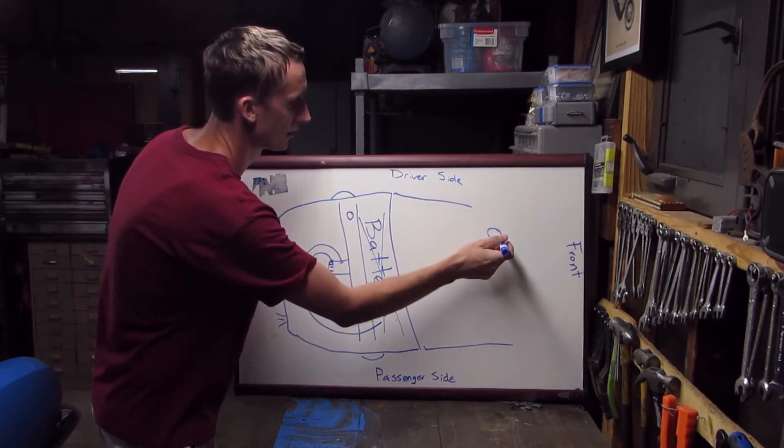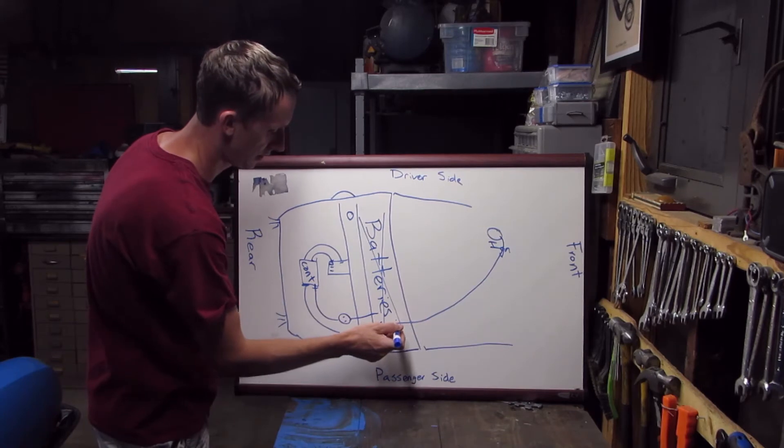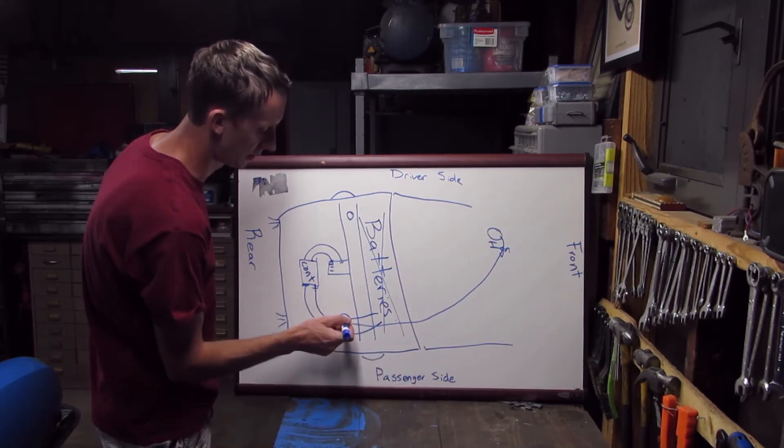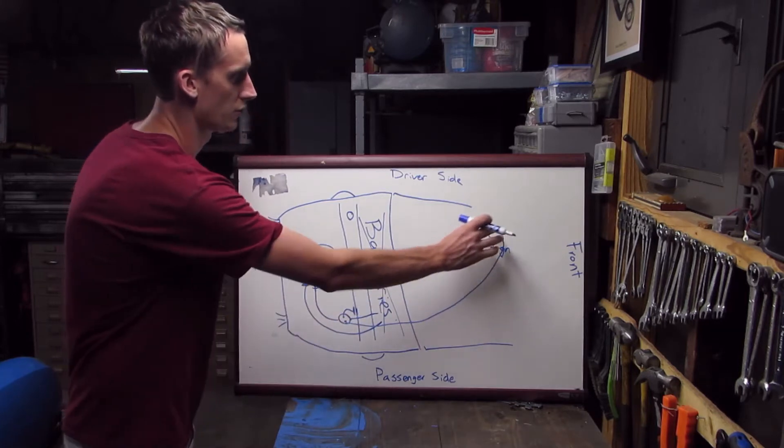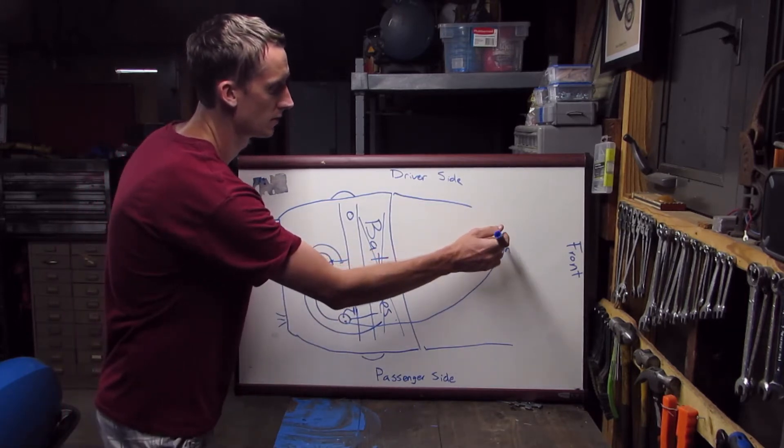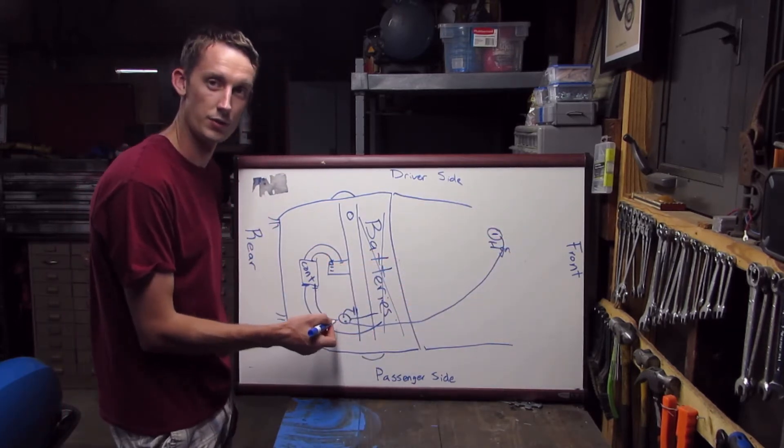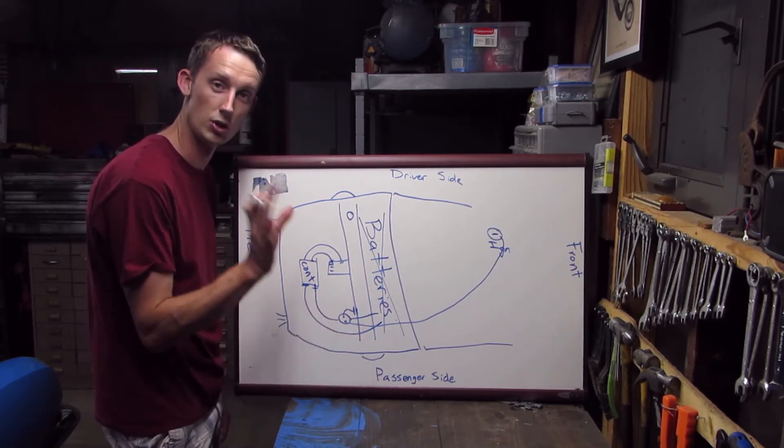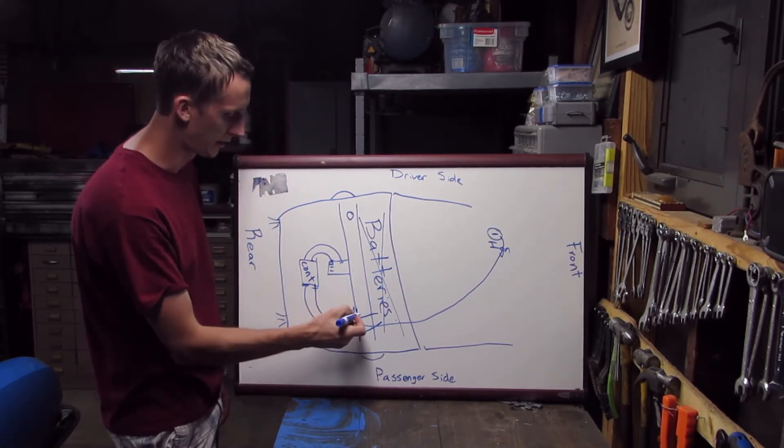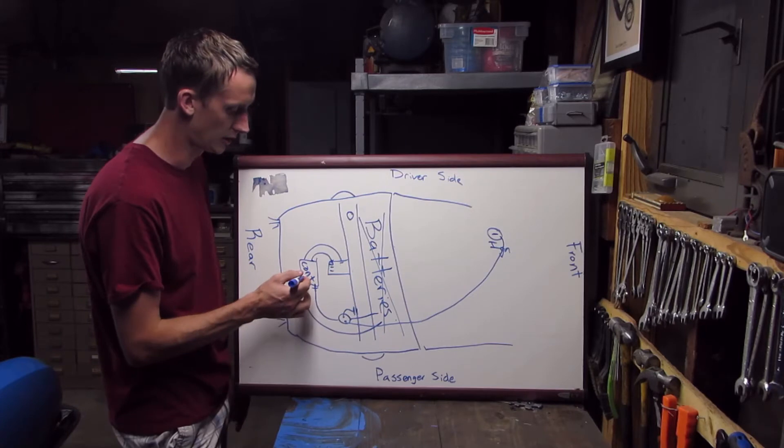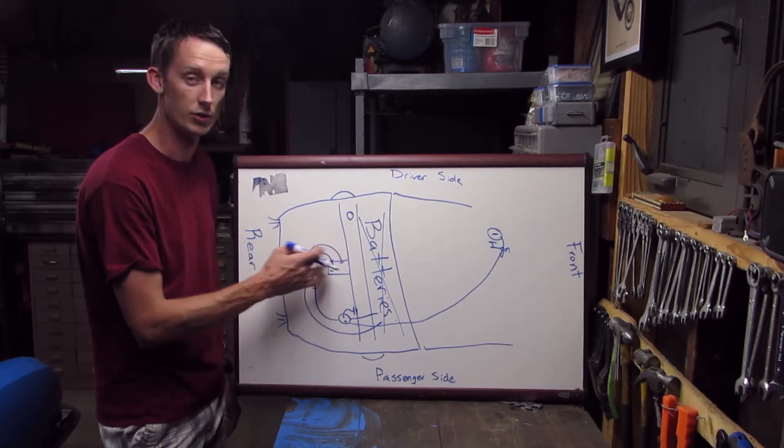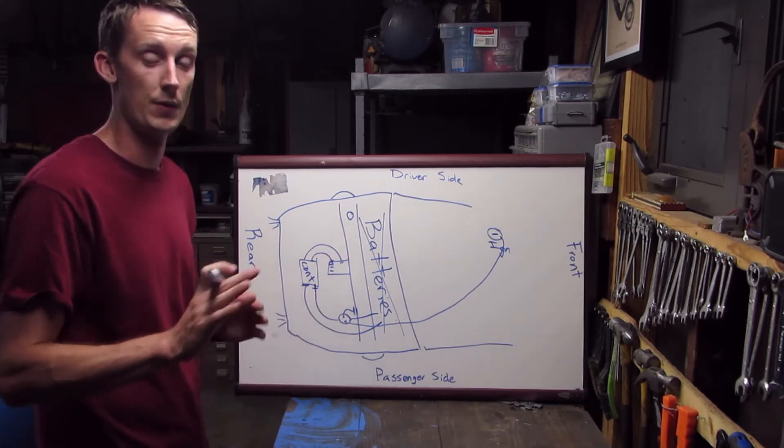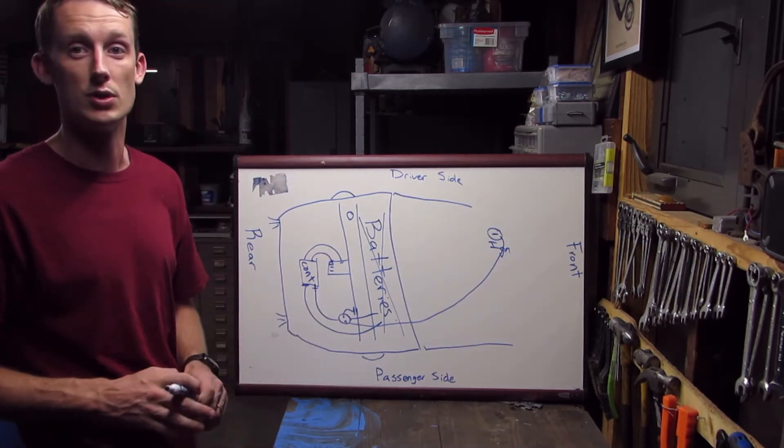With our ignition from the key, we would turn the key to the on position like we're going to start the car. When you do that, the signal will come across here to the contactor and this other side is grounded. As soon as you activate the key, it'll send that 12 volts to the contactor which will close the connection and allow the positive batteries to turn on the contactor.